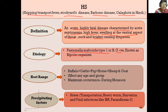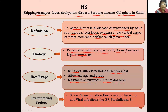As for the host range, buffalo is highly susceptible, whereas sheep and goat are less susceptible to the organism and the disease. It affects any age and any breed of animals. The disease occurs maximally during the monsoon season, that is the rainy season.